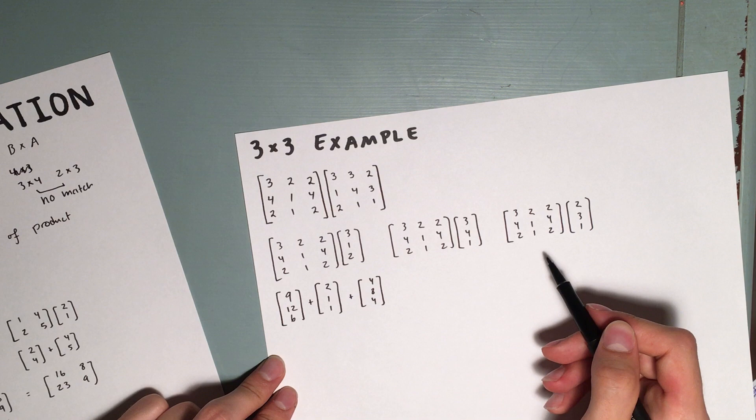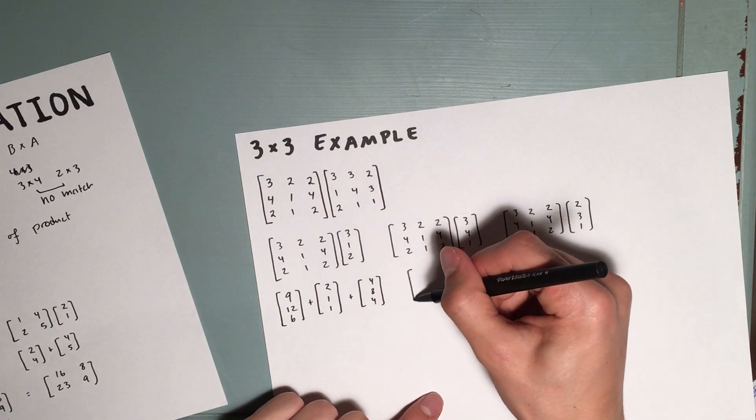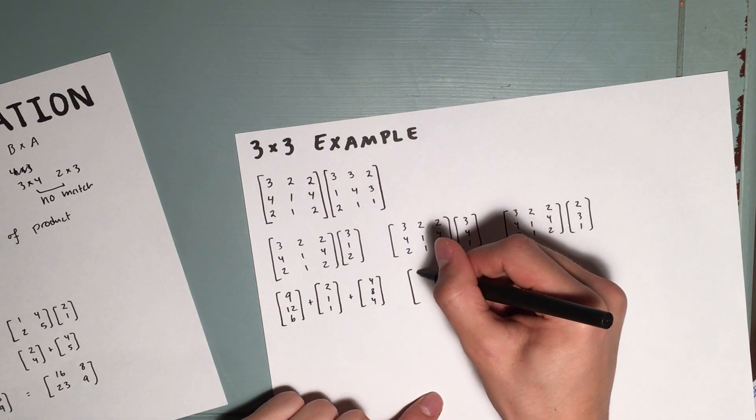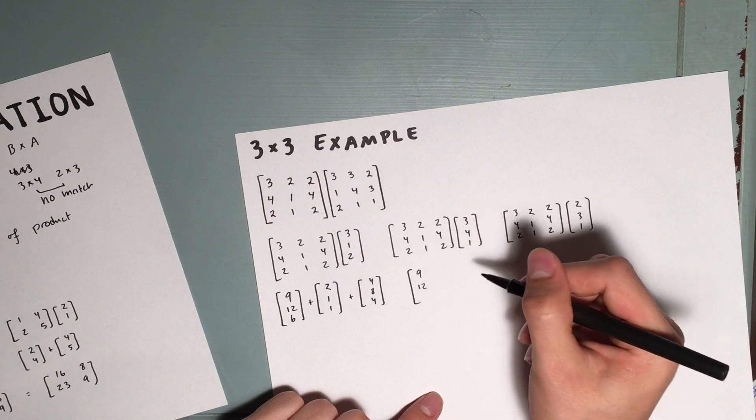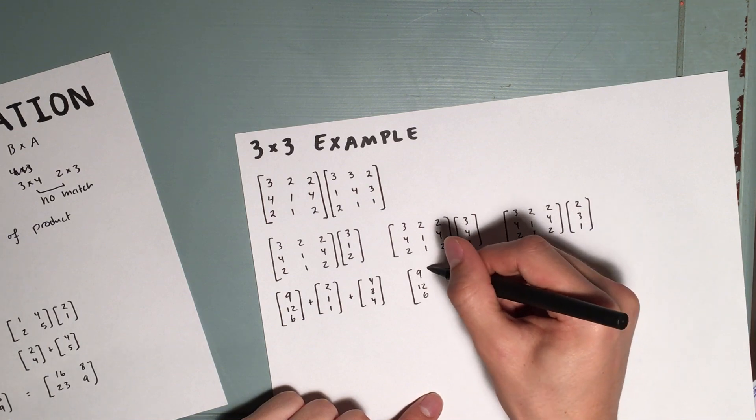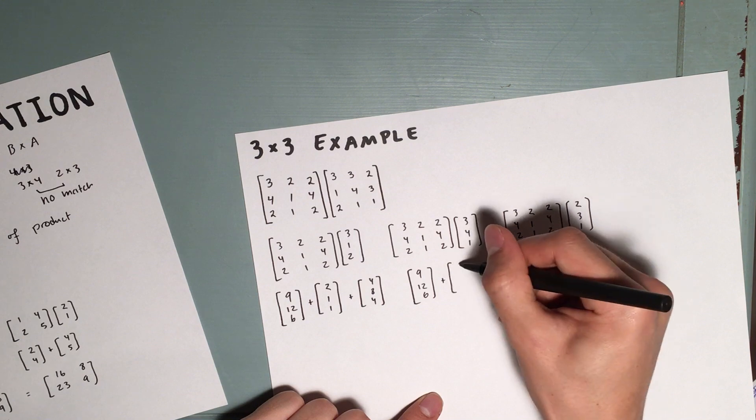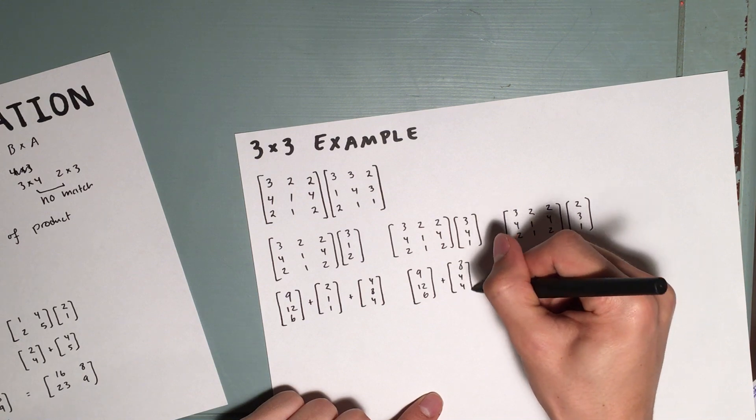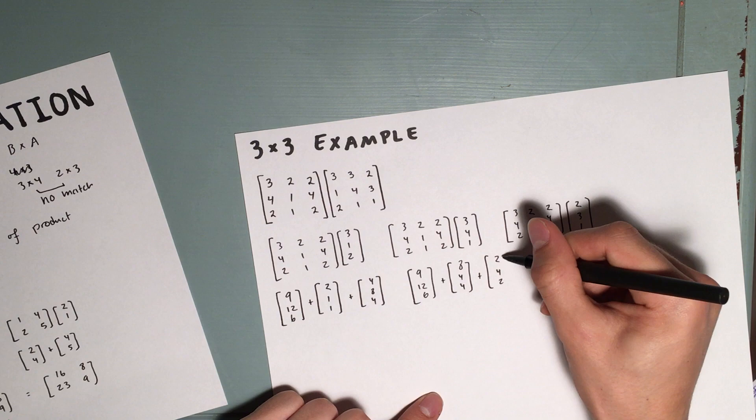Try to do these next two by yourself. In any case, it's going to be 9, 12, 6, plus 8, 4, 4, plus 2, 4, 2.